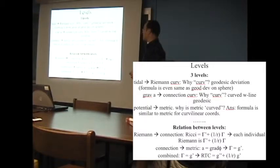A is equal to minus grad phi. This is the connection. This is the metric. So in other words, the connection is something like the derivative of the metric.